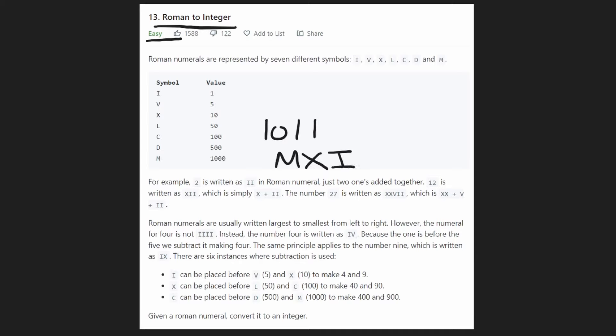But there's a special case where you might put the smaller one before the larger one. For example, what happens if we do this? I and then M. We know M is a thousand. We know I is one. So what does this mean? Is this a thousand and one? No, because remember, they're supposed to be from largest to smallest. So what happens if you do put a smaller one before the larger one?